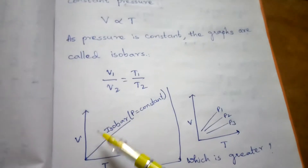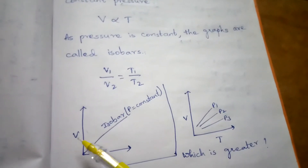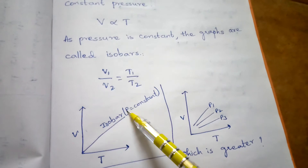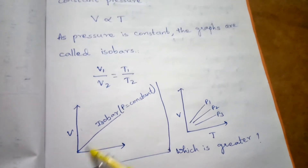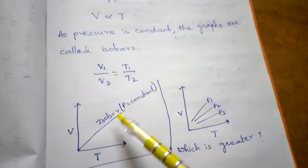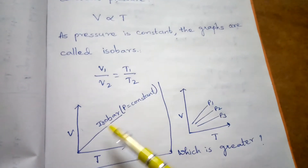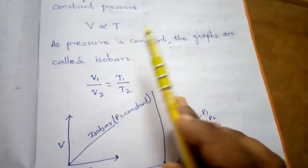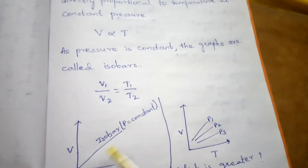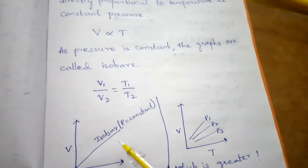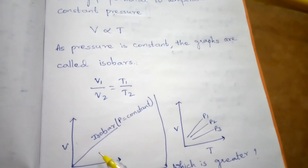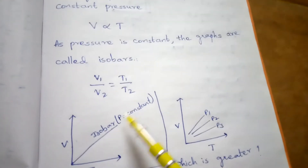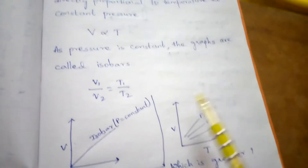The graph plotted between V and T gives a straight line, called an isobar, because pressure is maintained constant. All these graphs are maintained at constant pressure, so all such graphs are called isobars.